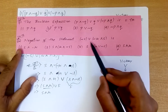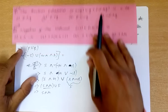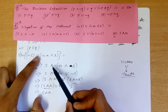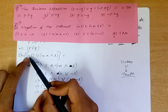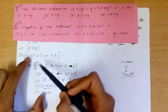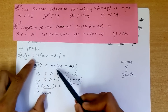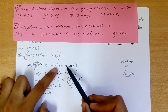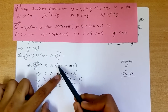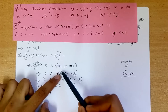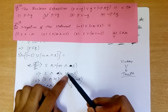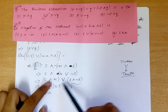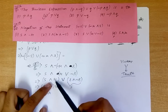Now the second question: we calculate the negation of (negation of S or negation of R) and S. Applying negation, OR converts to AND. Since we already have a negation on S, double negation makes it positive, so we get S. For the second part, AND converts to OR and the double negation cancels, giving us R or negation of S.